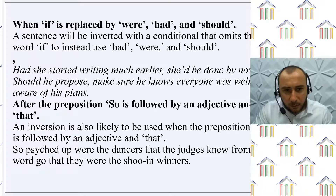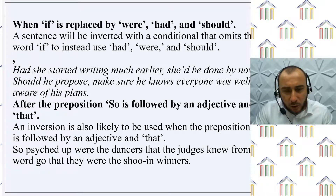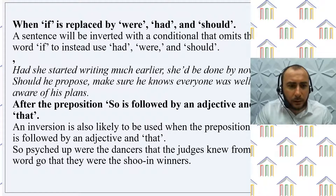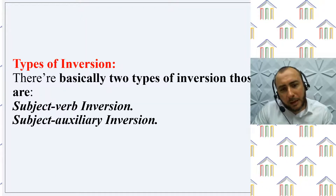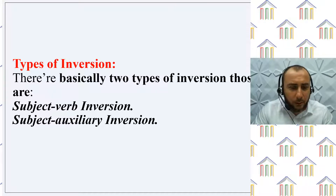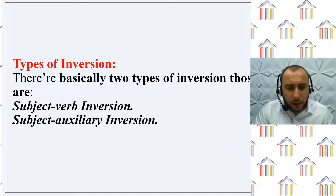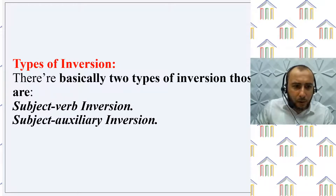After the preposition 'so' is followed by an adjective and 'that', an inversion is also likely to be used. For example: "So psyched up were the dancers that the judges knew from the word go that they were the school winners." In questions, needless to say, sentence inversion is what distinguishes questions from mere statements. It can also be used in a statement to bring variety to your style of writing, but you have to be extra wary to avoid sounding awkward or too formal. There are basically two types of inversion: subject-verb inversion and subject-auxiliary inversion.